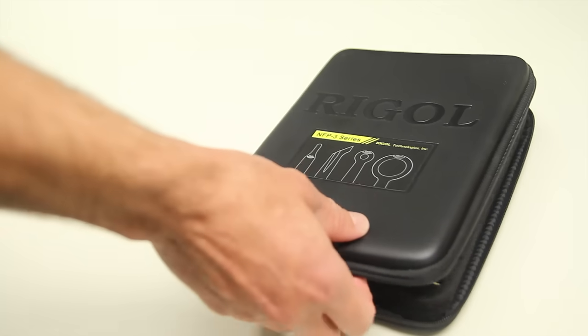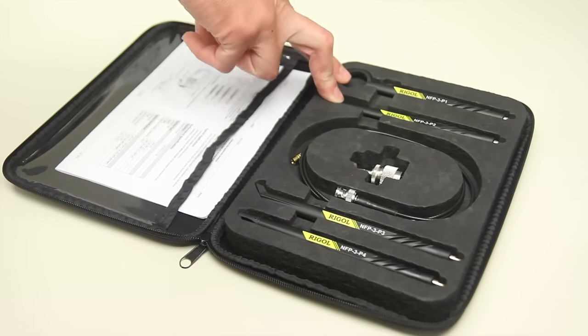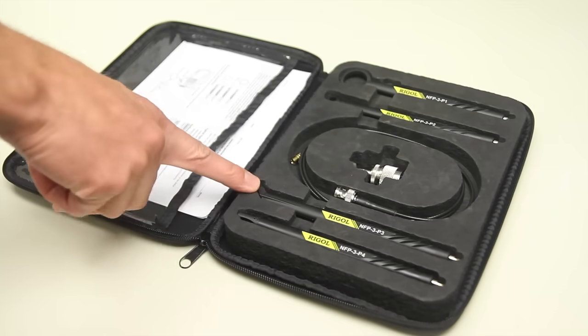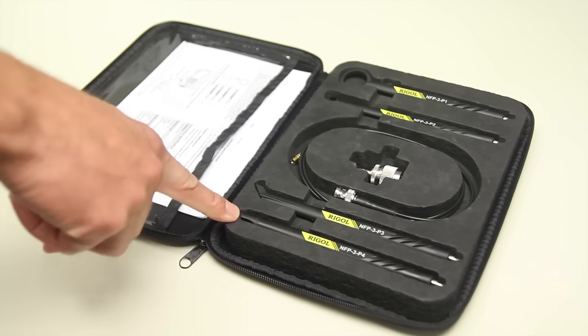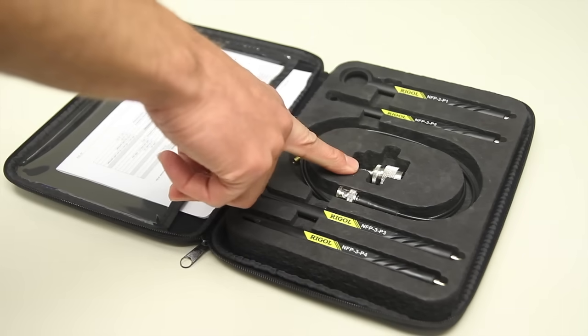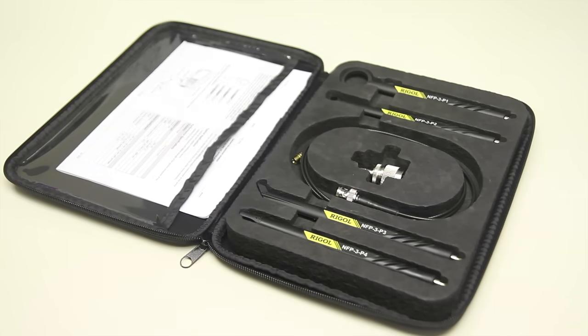The kit comes with a handy carrying case, two near-field probe loops, one line probe and one point probe, as well as cable and adapter for connection to your Spectrum Analyzer input.